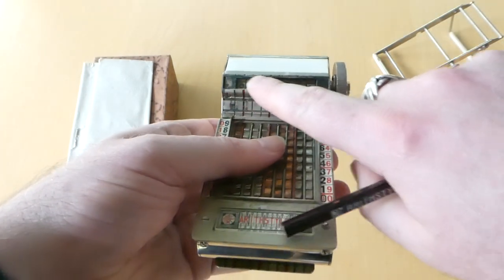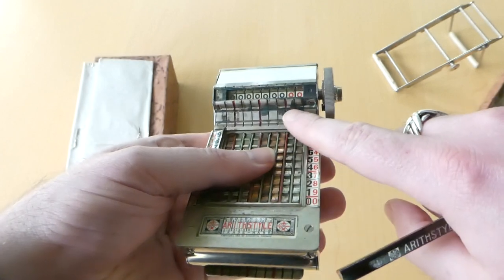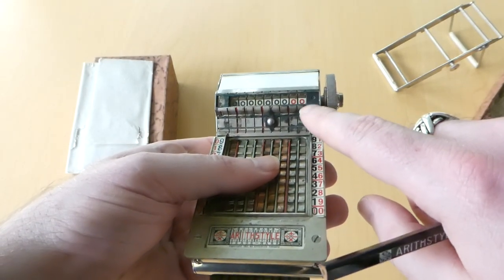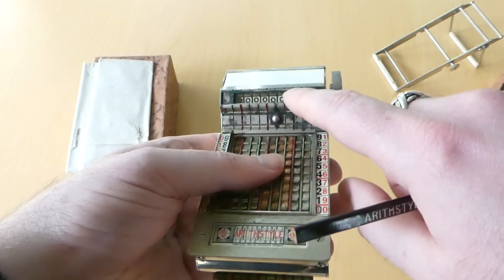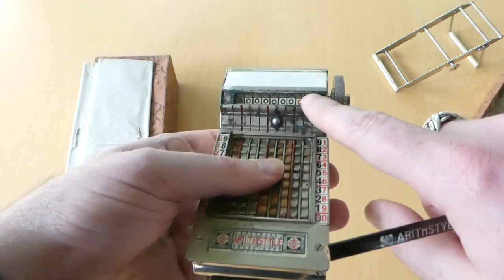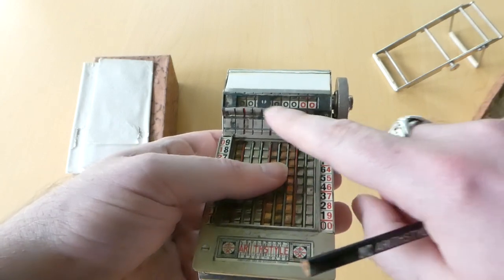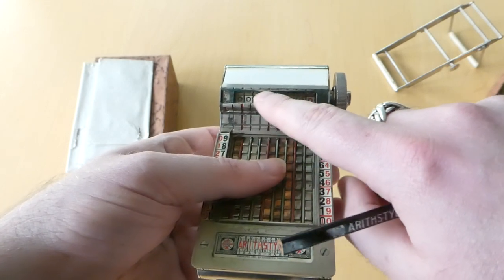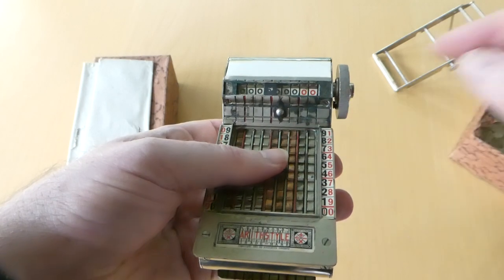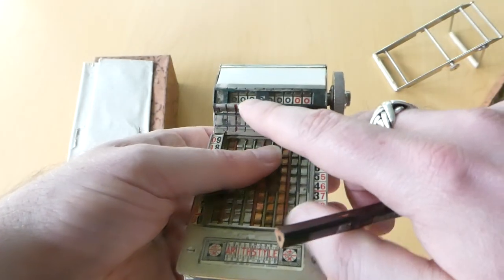And there's this decimal pointer here that you can move around, and there's also this cover. There's a small knob that came off, but with this you can cover a digit or split the register in two parts. You can cover a digit for when you subtract and you have an extraneous one in the leftmost significant position.